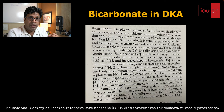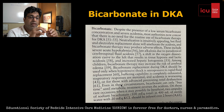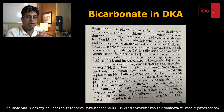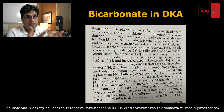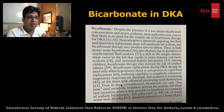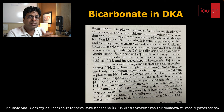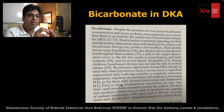In conclusion, give bicarb in DKA only when pH is severely acidic — below 6.9 — targeting pH above 7, while fluids, electrolytes, and insulin handle the rest. Other indications include refractory hyperkalemia, shock unresponsive to fluids, severe respiratory fatigue from hyperventilation, or pre-existing renal failure. DKA patients usually tolerate acidosis well; the definitive therapy is fluids, electrolytes, and insulin.